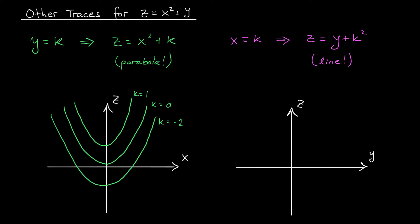For example, when k is 0, we get the line z equals y. Looks something like this. When we increase k to 1 or we decrease k to negative 1, that line is going to shift up by 1 unit since k is squared. So we get the line z equals y plus 1.